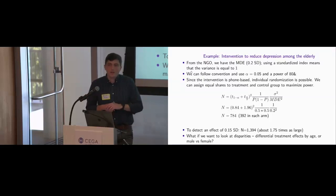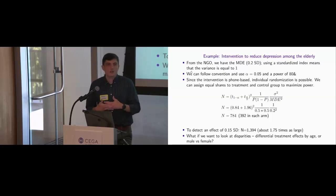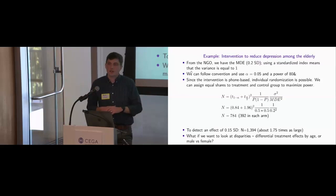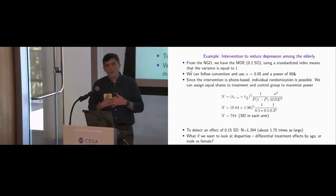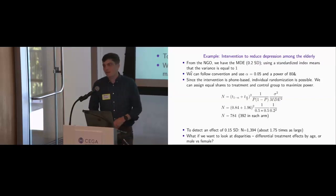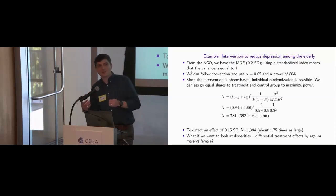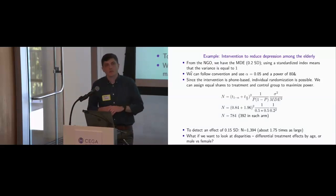A key point on attrition: you can account for it in your power calculations, but it's better to design a study with as little attrition as possible — that's probably your best way to improve statistical power. For example, in the Kenya Life Panel Survey, we spend 10-15 minutes collecting detailed contact information every round so we can follow up with people over time, which is a trade-off worth making.